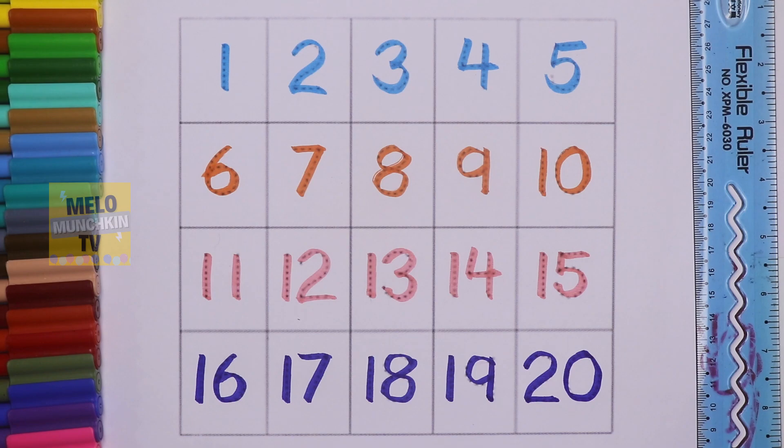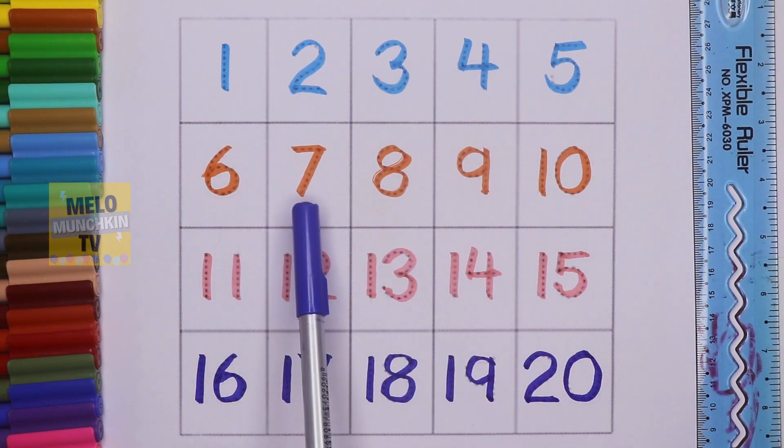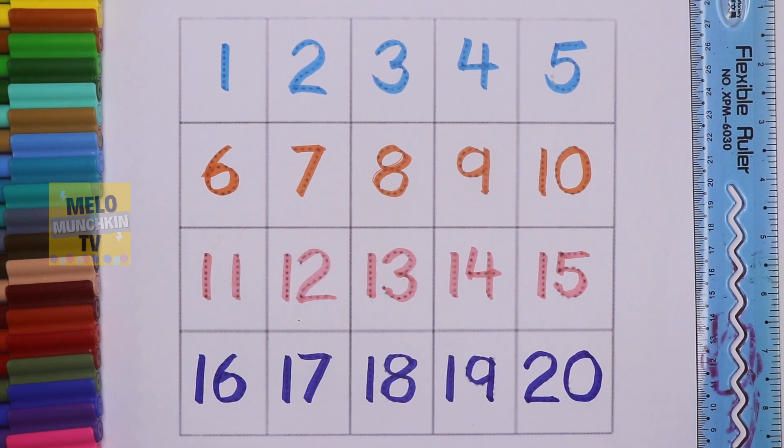Let's count once more. 1, 2, 3, 4, 5, 6, 7, 8, 9, 10, 11, 12, 13, 14, 15, 16, 17, 18, 19, 20. Okay kids, take care and bye bye.